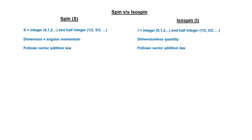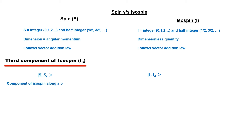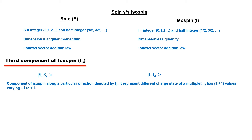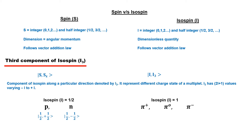Comparing spin and isospin further: isospin also has a projection, analogous to the z-component of spin. In spin, this projection is denoted by the z-component, while in isospin it is called the third component of isospin, I3. For members of any multiplet group with isospin I, the values of I3 range from +I to −I. For example, the proton-neutron doublet has isospin 1/2; the proton has I3 = +1/2 while the neutron has I3 = −1/2. For the pion triplet with isospin 1, π+ has I3 = +1, π0 has I3 = 0, and π− has I3 = −1.